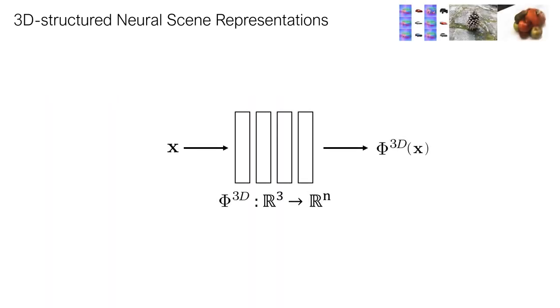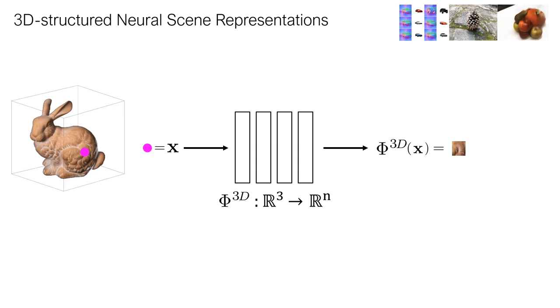Specifically, implicit neural scene representations represent a scene via function phi from R3 to Rn, parametrized via a neural network, which takes in a 3D coordinate x and returns a representation of whatever is at that coordinate.